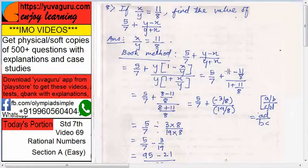5 upon 7 as it is now. Solve this, 8, 1 numerator minus 11. So, 8 minus 11 upon 8. Similarly, 8 plus 11 upon 8. Solve this again. 5 upon 7 plus minus 3 upon 8 upon 19 upon 8.